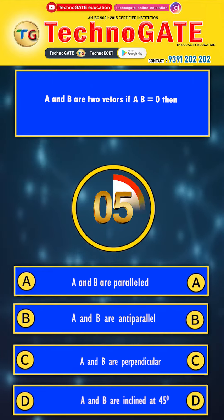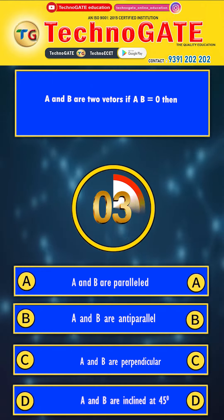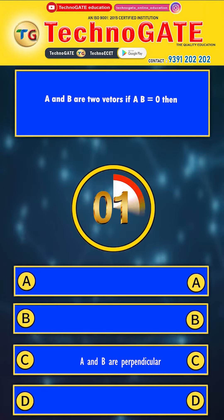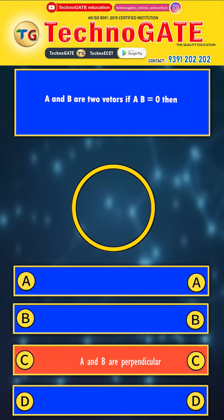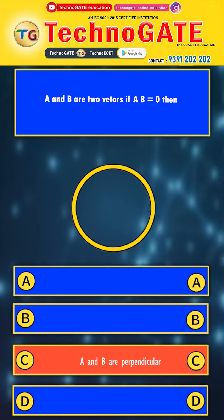Your time starts now. The correct answer is Option C: A⃗ and B⃗ are perpendicular.